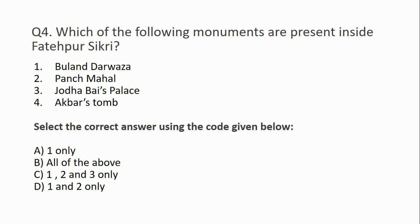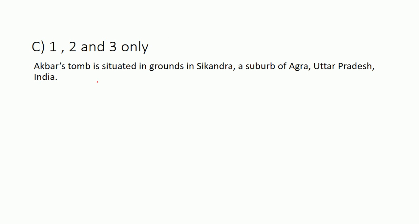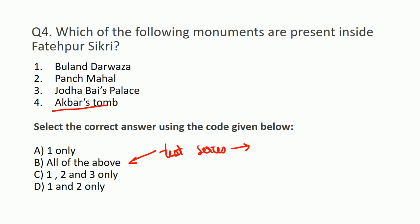Question number four: Which of the following monuments are present inside Fatehpur Sikri? Select the correct answer using the code given below - A) one only, B) all of the above, C) one, two and three, D) one and two only। Test series में जब all of the above दे रखा हो तो उसे ही mark कर देते हैं - ऐसा हर जगह न करें। इसका answer है one, two and three only। Akbar's tomb is situated in Sikandra, a suburb of Agra, Uttar Pradesh - बाकी तीनों monuments Fatehpur Sikri के अंदर हैं।